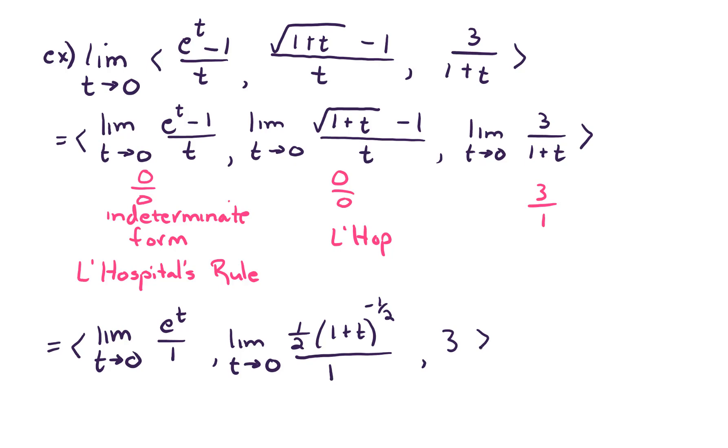Now, trying to evaluate the limit, let's plug in t equals 0. We get e to the 0, which is 1. For the second component, plugging in 0, we get 1 half over the square root of 1, so that's just 1 half. And the third component is 3.